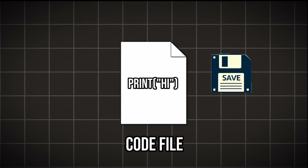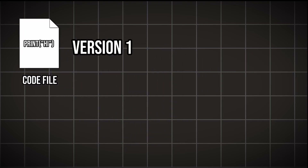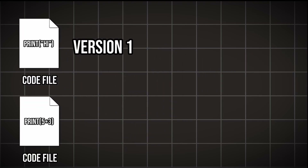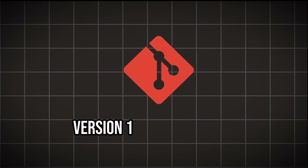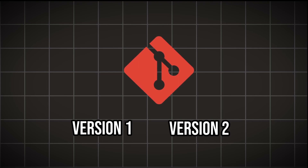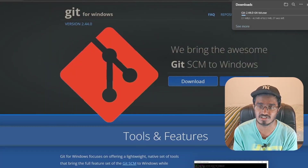Next is Git itself, which is responsible for version control. Let's say you create a code file, write some code, and save it — that's the initial version. If you make changes, that becomes the second version. Git allows you to work with all these versions together, saving every version of the file so you can access any of them at any time. Go to the Git website and click Download to get the installer.